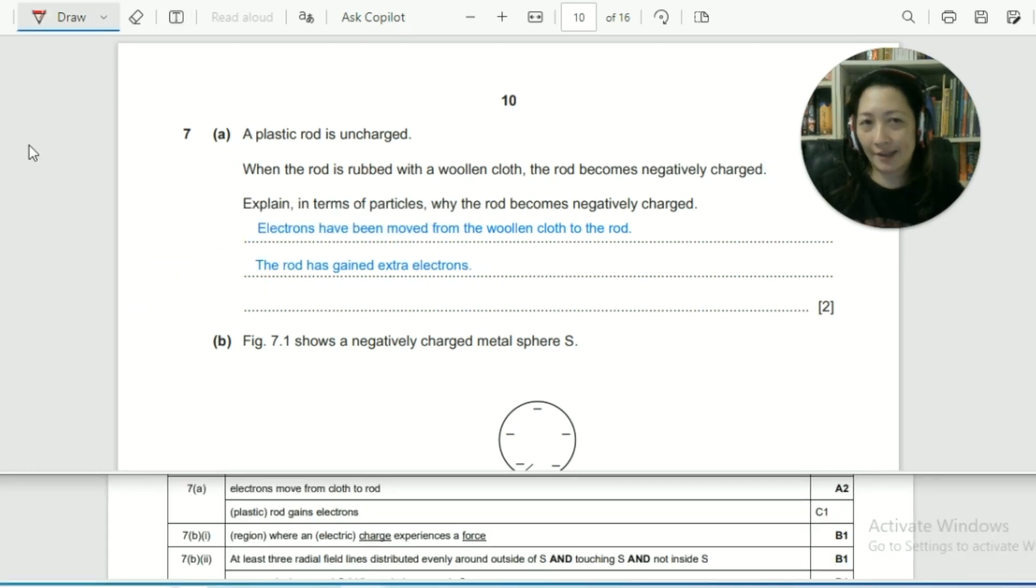So let's quickly check our answer against the mark scheme. So you can see in the mark scheme, two marks are given just for mentioning that electrons move from the cloth to the rod. So this line alone would already give us the two marks. So even if you didn't write the second sentence and you only wrote the first one, you would still get the full two marks. That's what the mark scheme here indicates.